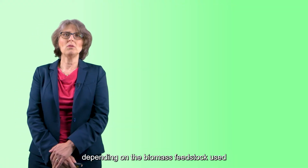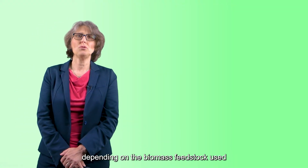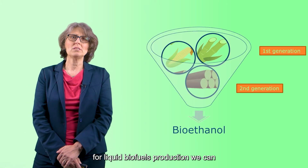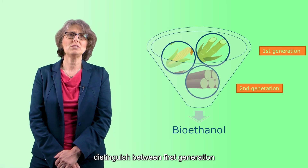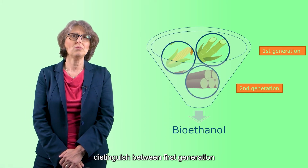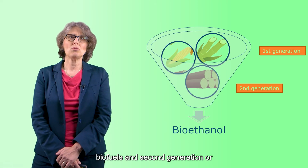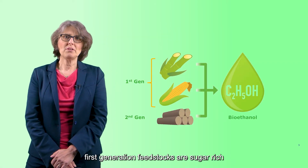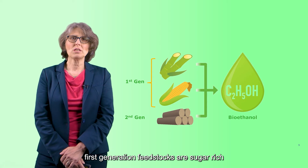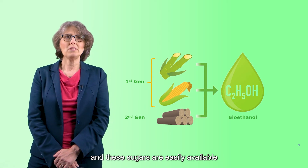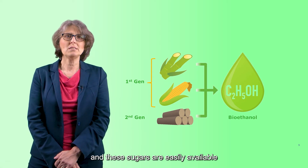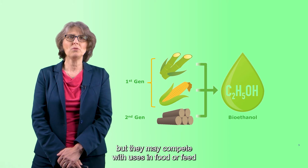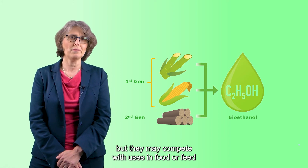Depending on the biomass feedstock used for liquid biofuels production, we can distinguish between first generation biofuels and second generation or advanced biofuels. First generation feedstocks are sugar-rich and these sugars are easily available, but they may compete with uses in food or feed.